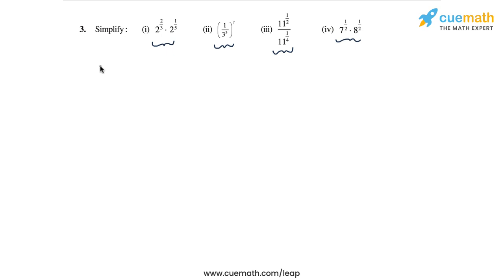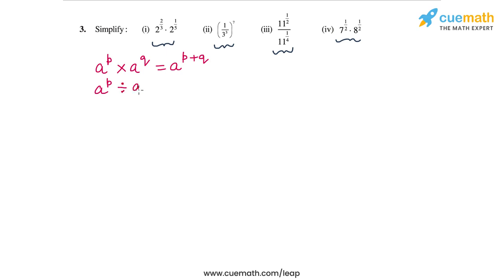The first law: a to the power p times a to the power q equals a to the power p plus q — the powers add when you multiply two exponential terms with the same base. The second law: when you divide two exponential terms with the same base, a to the power p divided by a to the power q equals a to the power p minus q.